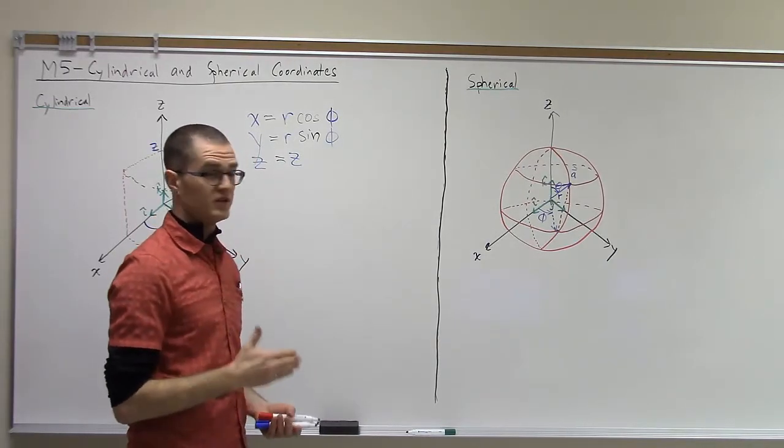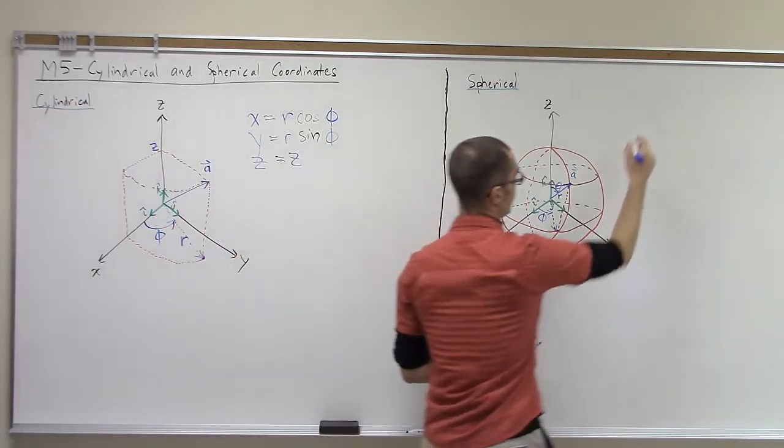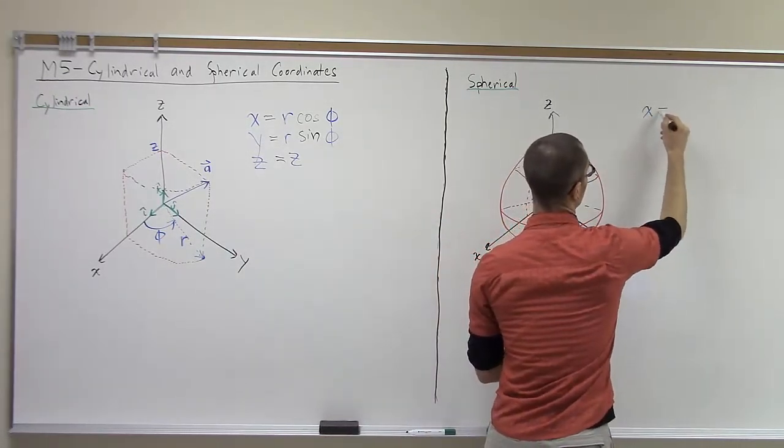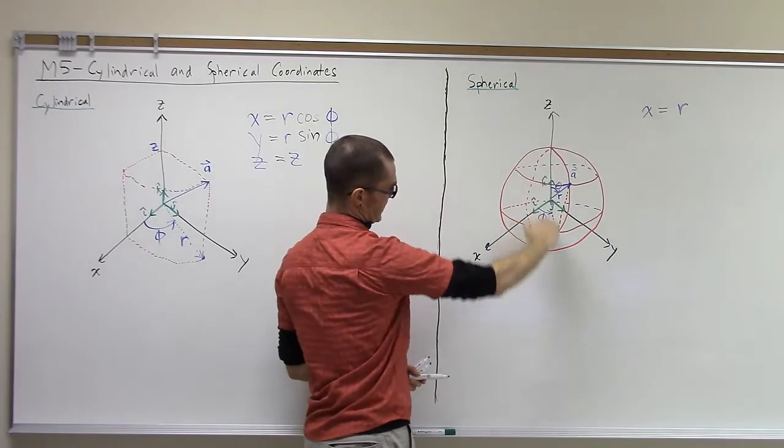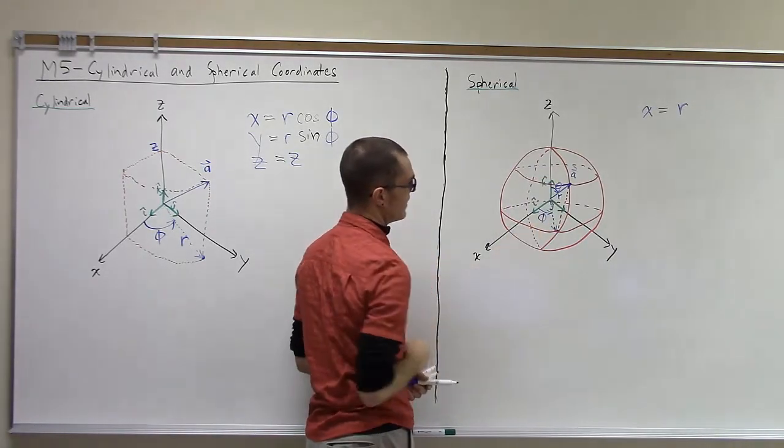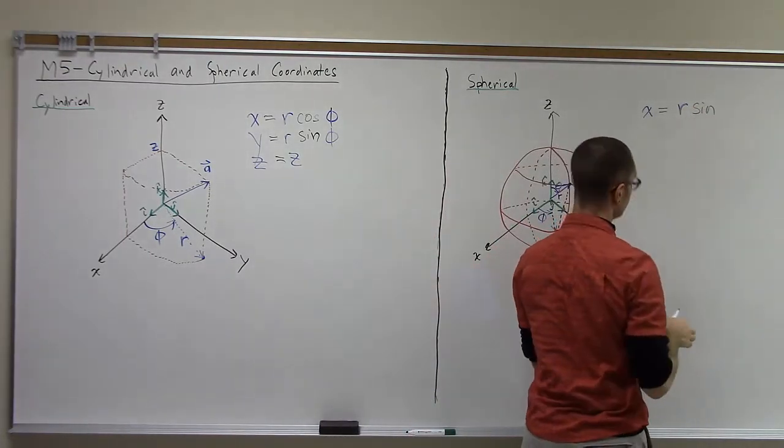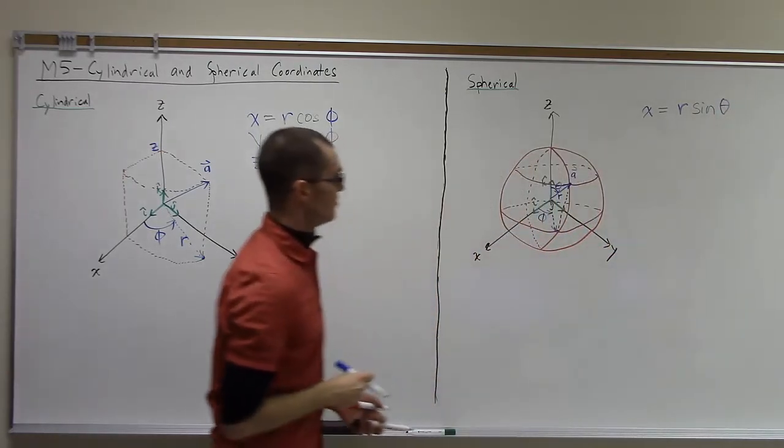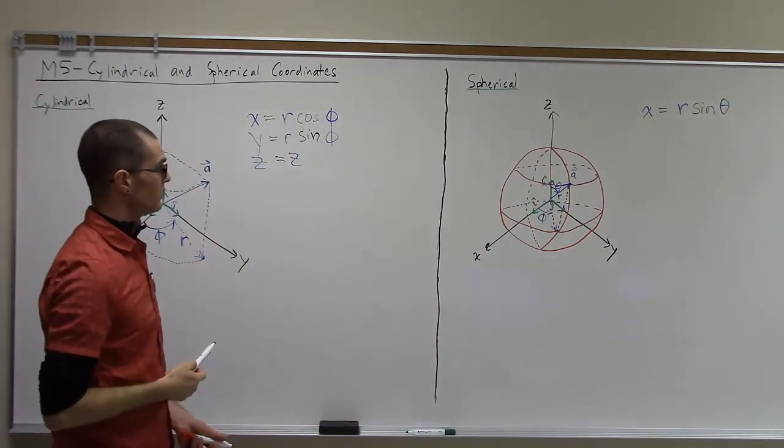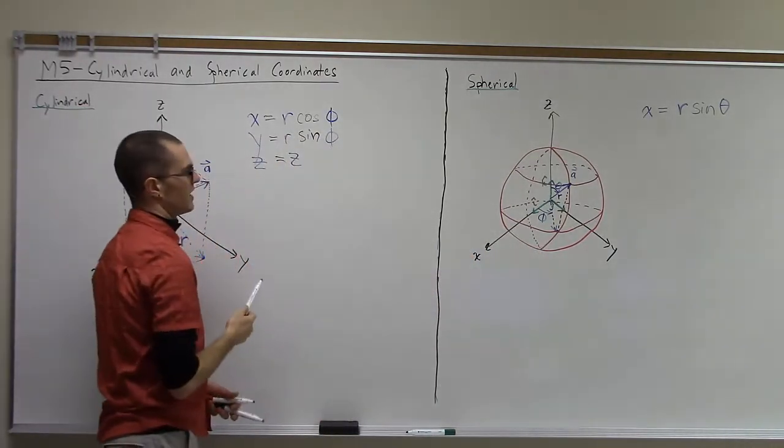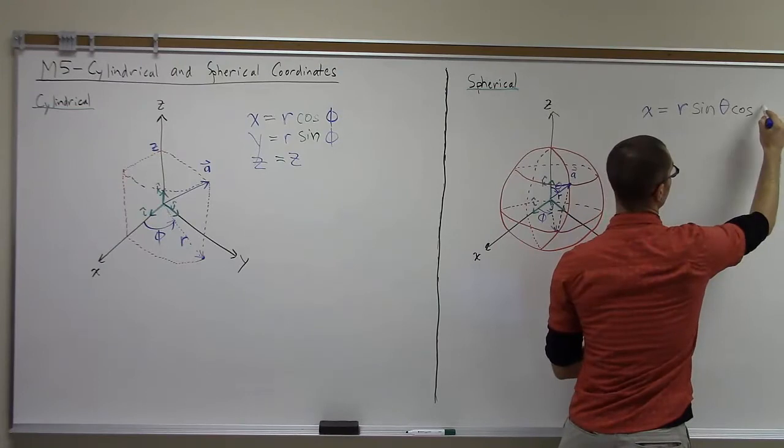So for the x-coordinate, we have this line r. And if we project that down to the x-y plane, that's going to be r sine of theta, theta being our latitude angle. And then as in the cylindrical coordinate system we can get our x component by projecting that one back to the x-axis. So again we're going to have cosine of phi.